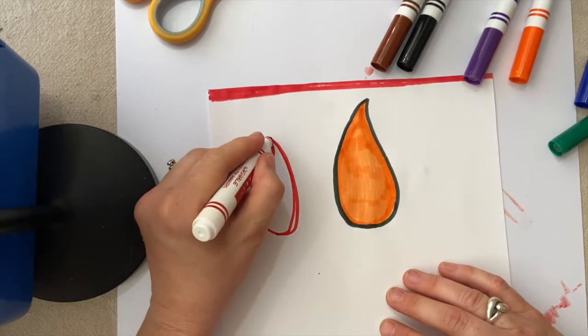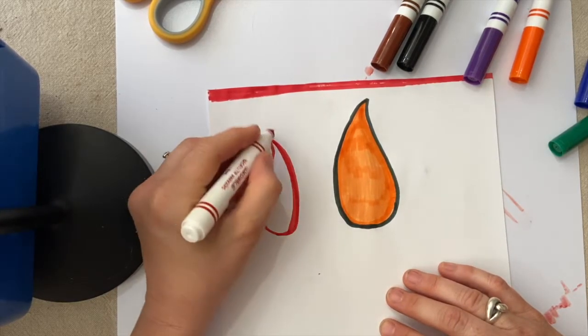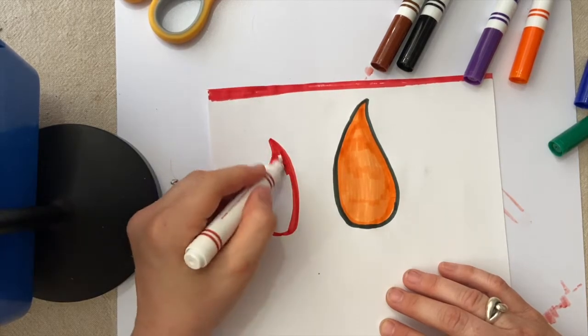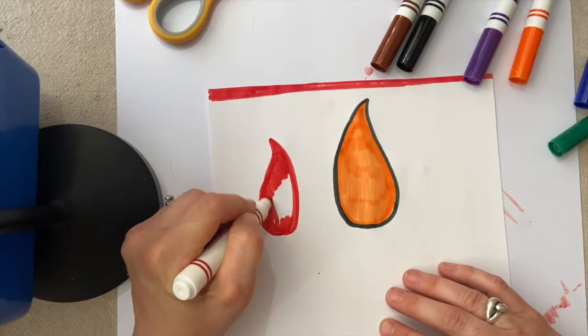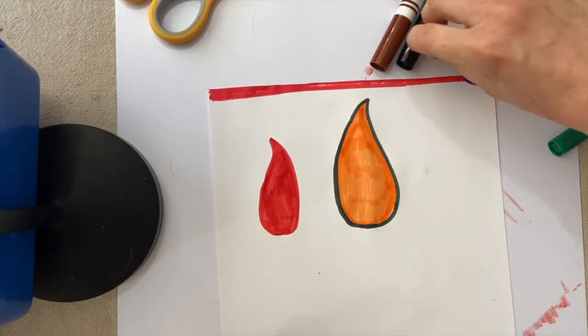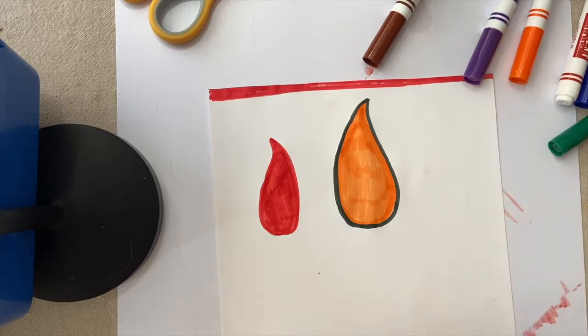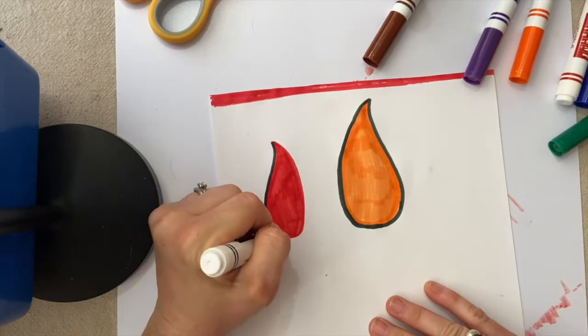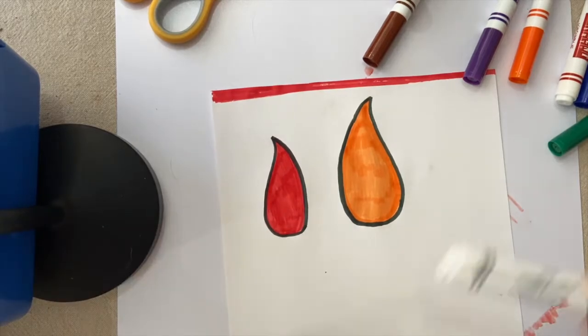I'm going to make this a little bit of a wider teardrop shape and then we can color that in. Once you've colored it in red, find your black marker once again so that we can outline it just like we did with the orange one.